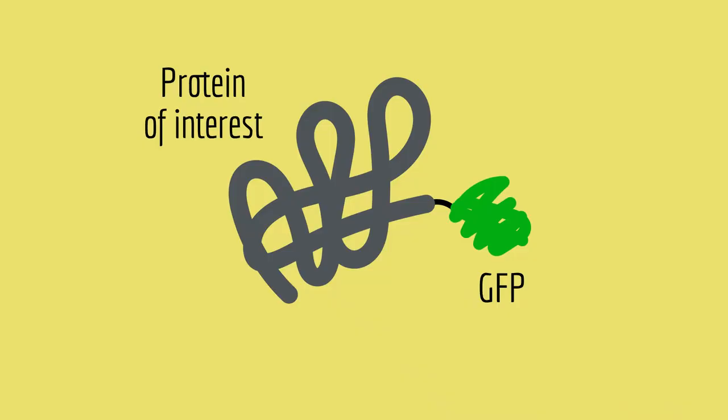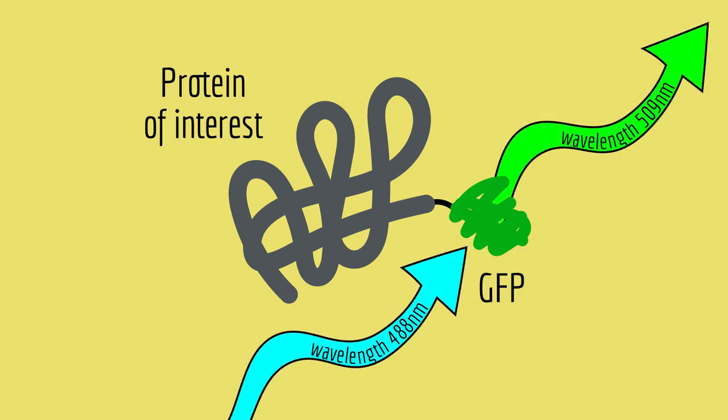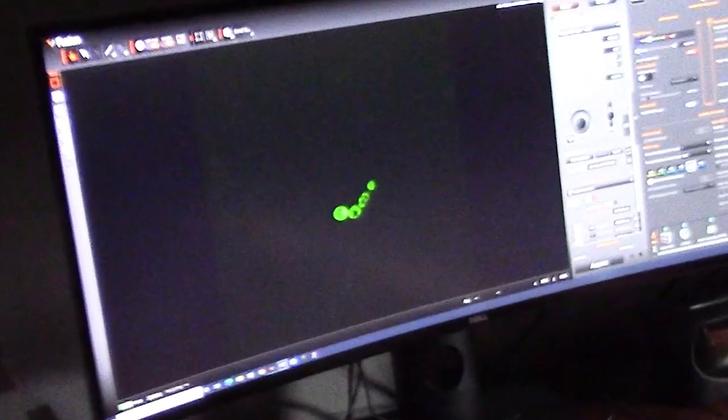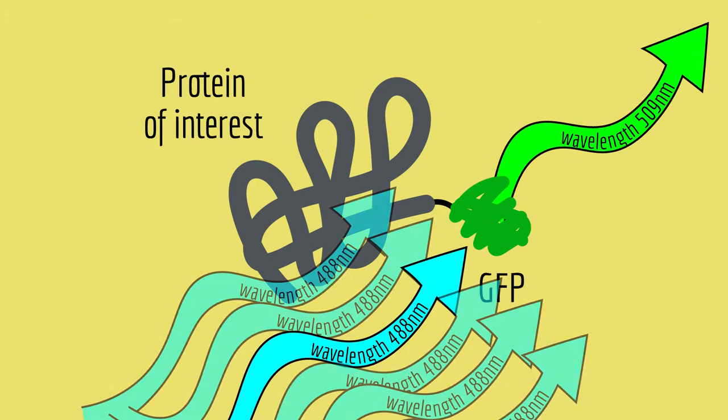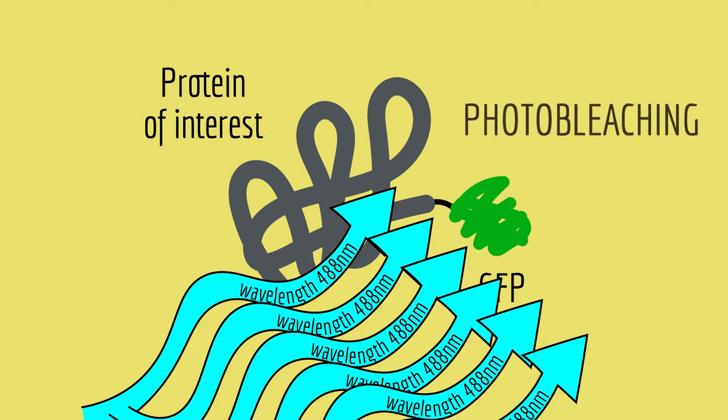However, we can mark a subset of proteins and see if that subset of proteins moves. The way we do that is with photobleaching. Fluorescent molecules like GFP must first be excited with light before they emit their own fluorescence. For example, the microscope shines blue light on cells, which makes the GFP in the cells emit green light, which the microscope's camera can photograph. It turns out that too much excitation light can permanently alter the fluorescent protein so that it no longer emits light. That's called photobleaching.